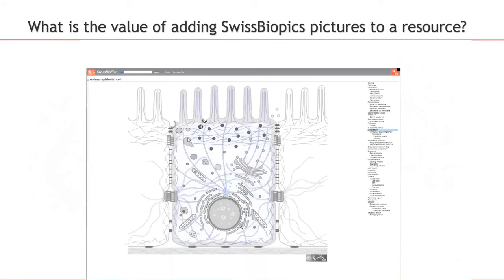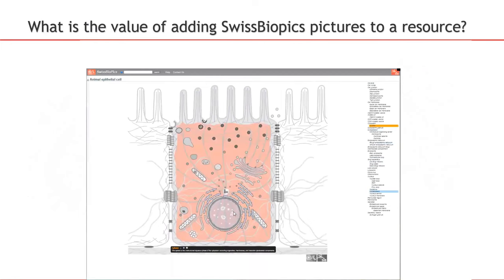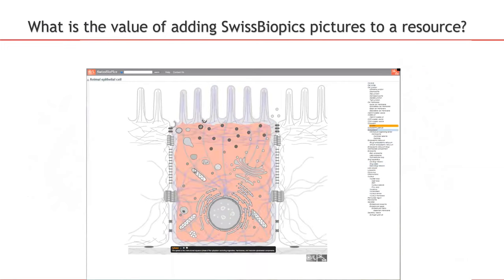SwissBioPix is made of interactive images. You can see the demonstration on SwissBioPix.org, in which you can highlight and click on every subcellular location, every organelle, and even get a definition on it. It's all embedded in the pictures.